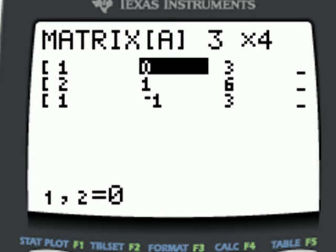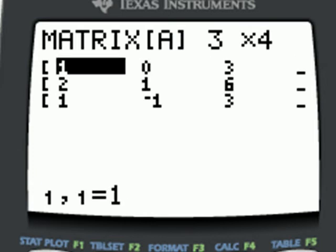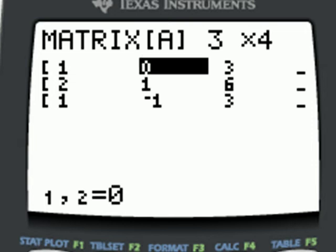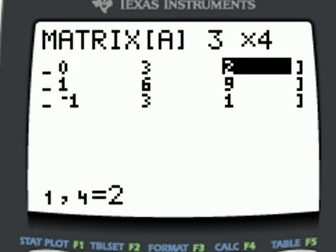Then we'll be sure to check our matrix, making sure that the numbers are correct. I'm going to check it by going down the columns. One, two, one. Zero, one, negative one. Three, six, three. Two, nine, one.